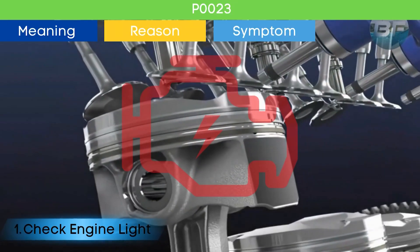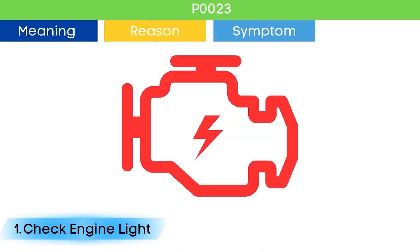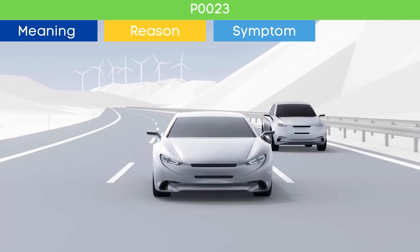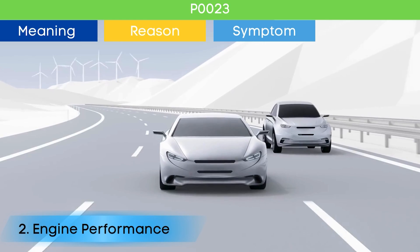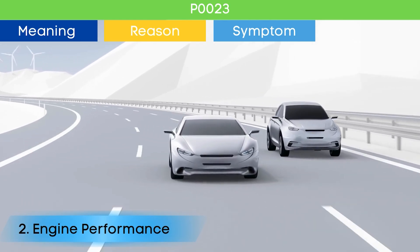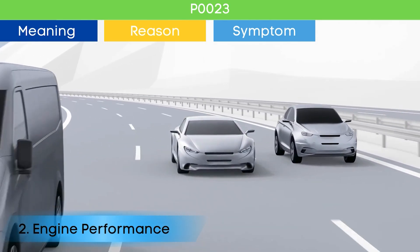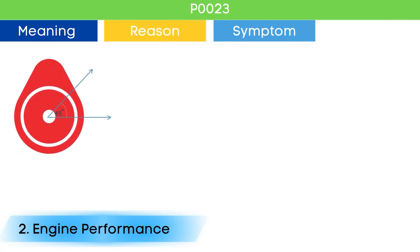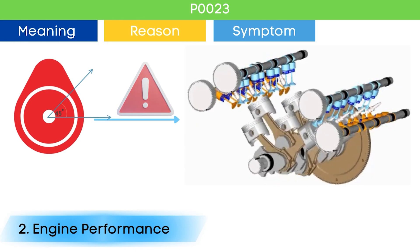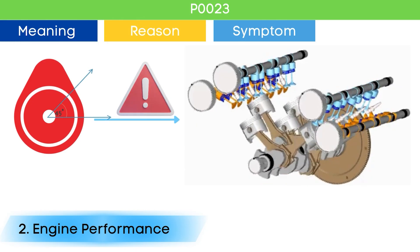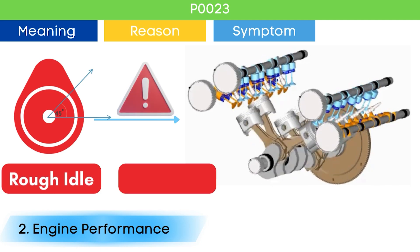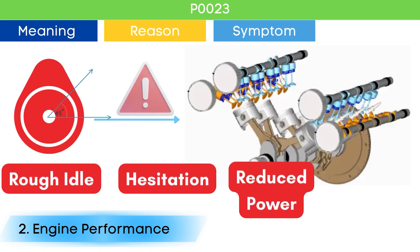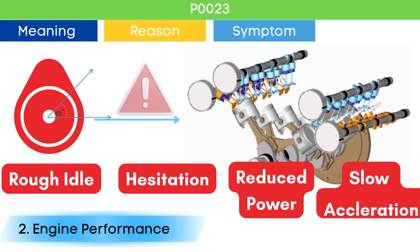Symptom number one: check engine light. The check engine light comes on if there are any active trouble codes related to EMS. Symptom number two: poor engine performance. Problems in the cam position actuator circuit can lead to incorrect cylinder valves opening and closing, which can manifest as rough idle, hesitation, reduced power, and sluggish acceleration.